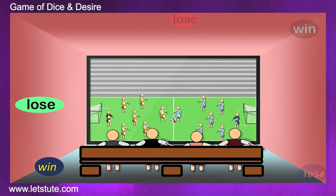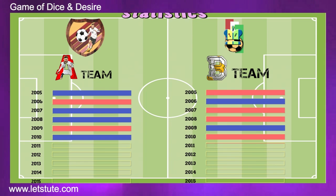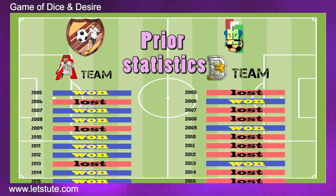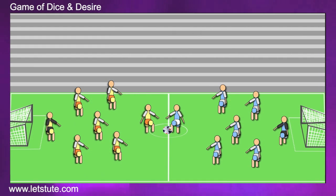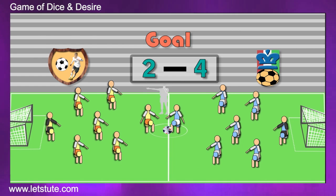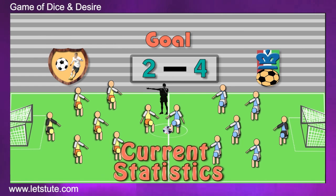The first thing is before the start of the match, we predict on prior records of the respective teams and decide which team should win. Second one, we predict while the match is half over, on the basis of current situation.